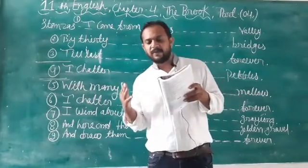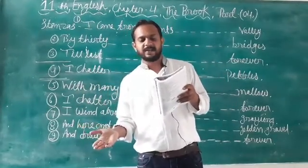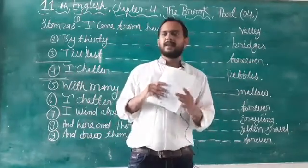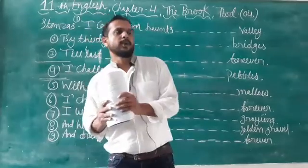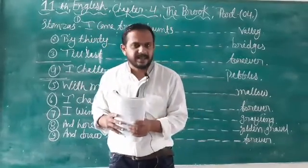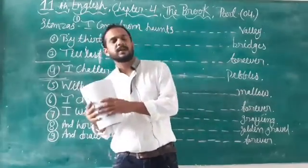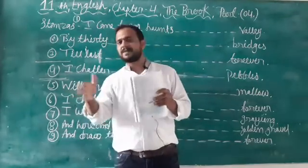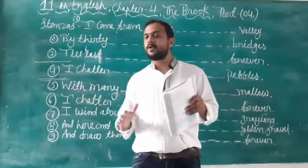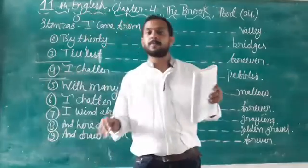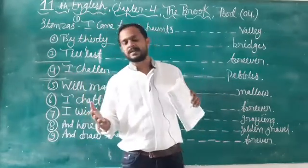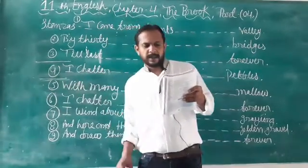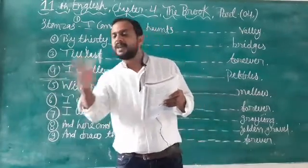He passes from many a field and fallow. Fallow means plow land — the land which is going to be plowed, left unseeded. So 'with many a curve, my bank I fret' — when the brook feels uneasy or angry, it starts making curves and goes through a zigzag way. And 'many a ferry fall land' — he passes from the land where fairies assemble.